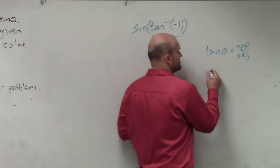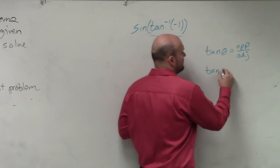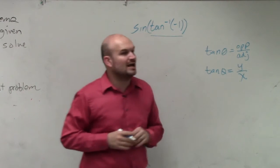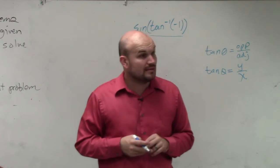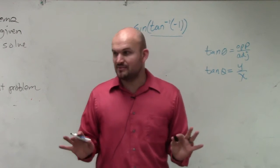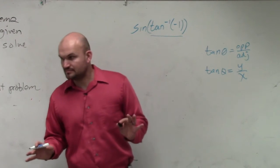However, there is another representation. We also talked about when we have a coordinate point on the unit circle. Tangent represents the y over the x-coordinate. Does that make sense, everybody?